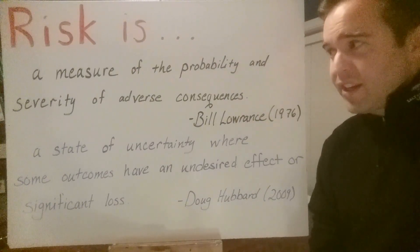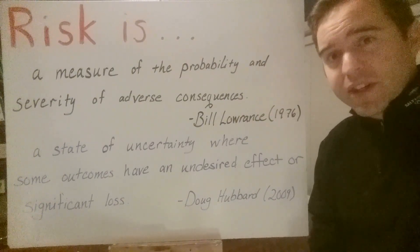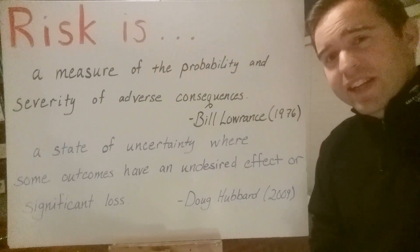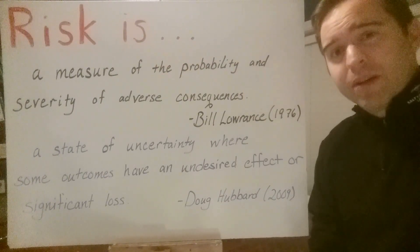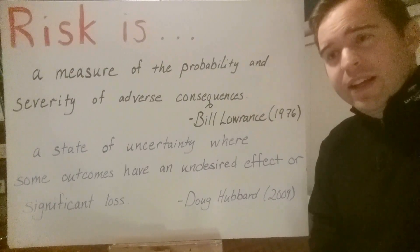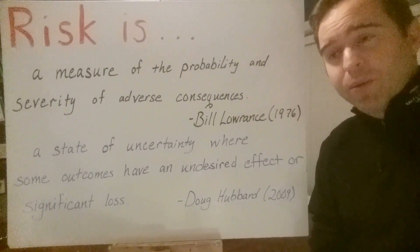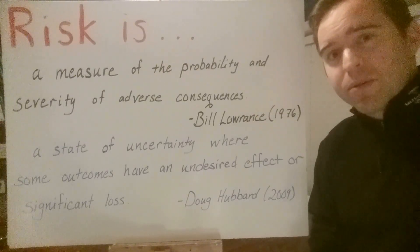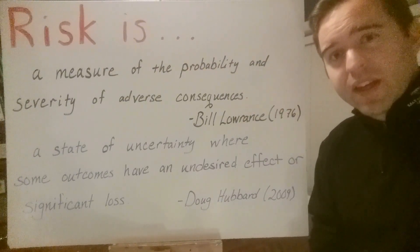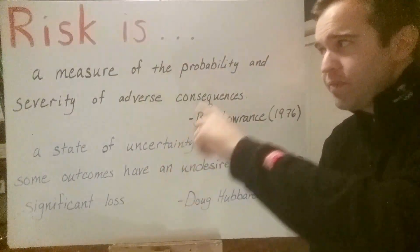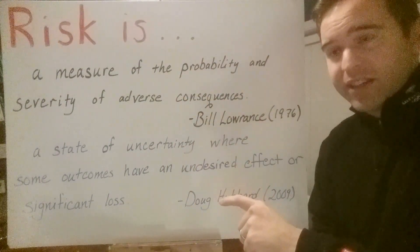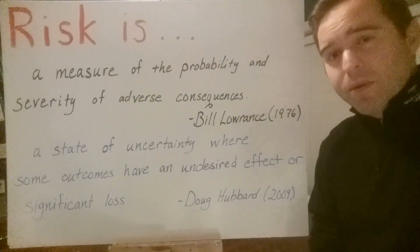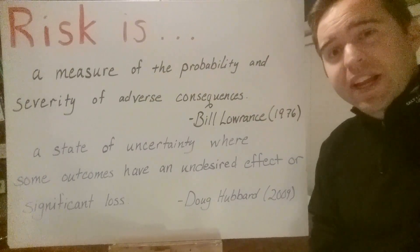There is a fourth theme that's implied: risk pays attention to the future. It's a measure of the probability and severity of adverse future consequences. If something has already happened, it's just an issue — a known problem with little uncertainty. When we talk about risk, we're focused on analysis of the future. So those are the four themes: it's a measure, of both probability and severity, of adverse consequences, as they might happen in the future.